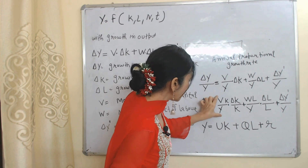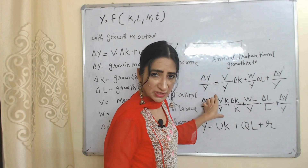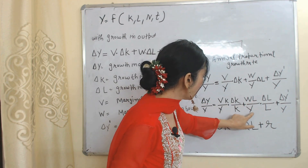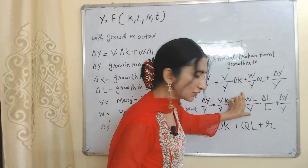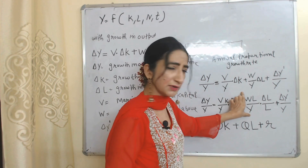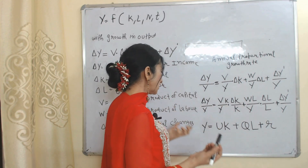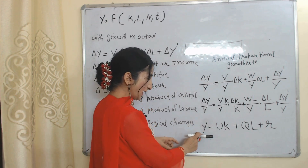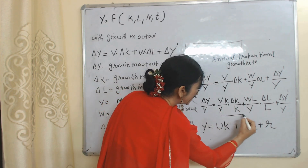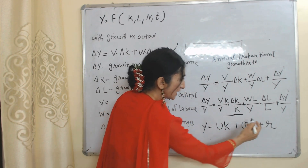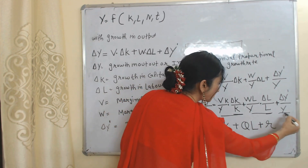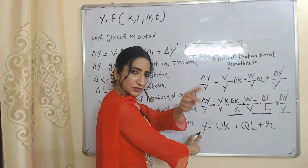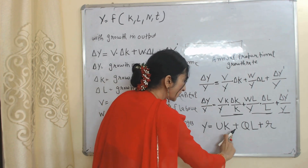Here VK/Y represents capital's contribution to national income, or the marginal product of capital relative to national income. WL/Y represents labor's contribution to national income, or the marginal product of labor relative to national income. For simplicity, we write ΔY/Y as Y (growth rate), VK/Y·(ΔK/K) as UK, WL/Y·(ΔL/L) as QL, and ΔY'/Y as R.